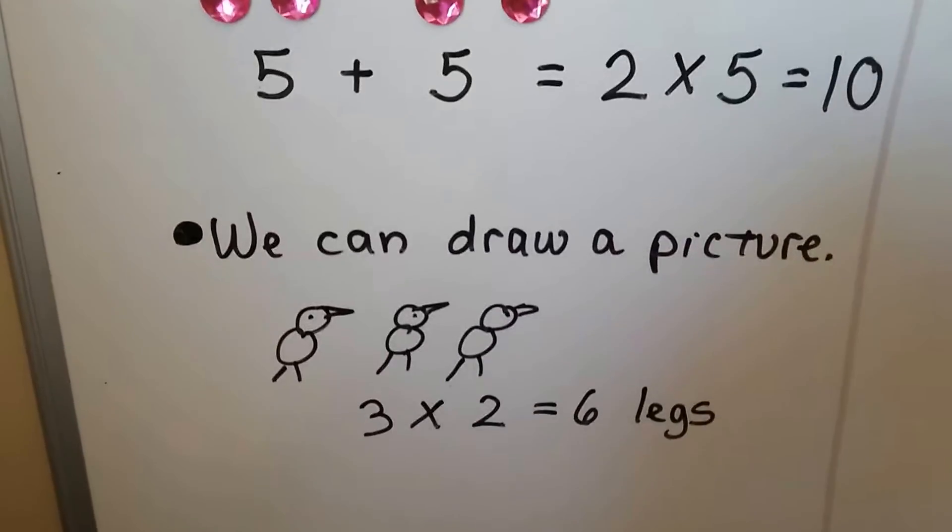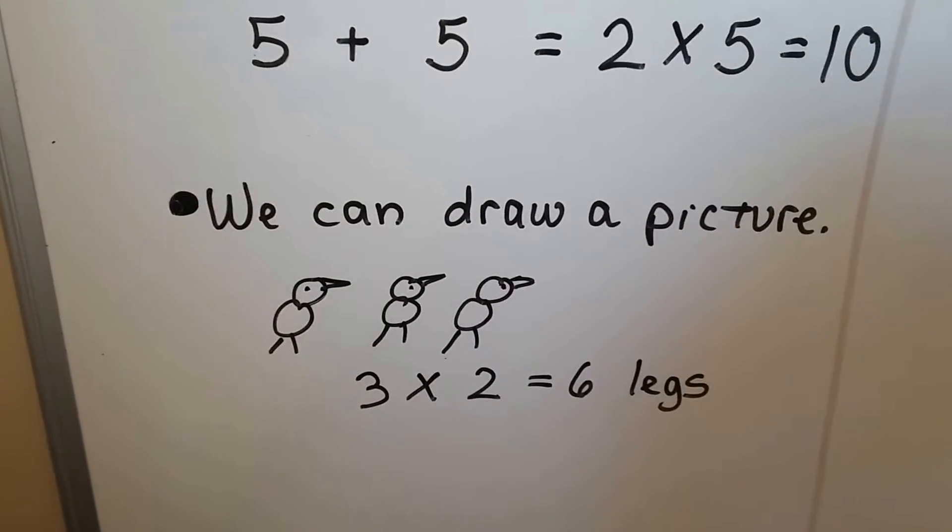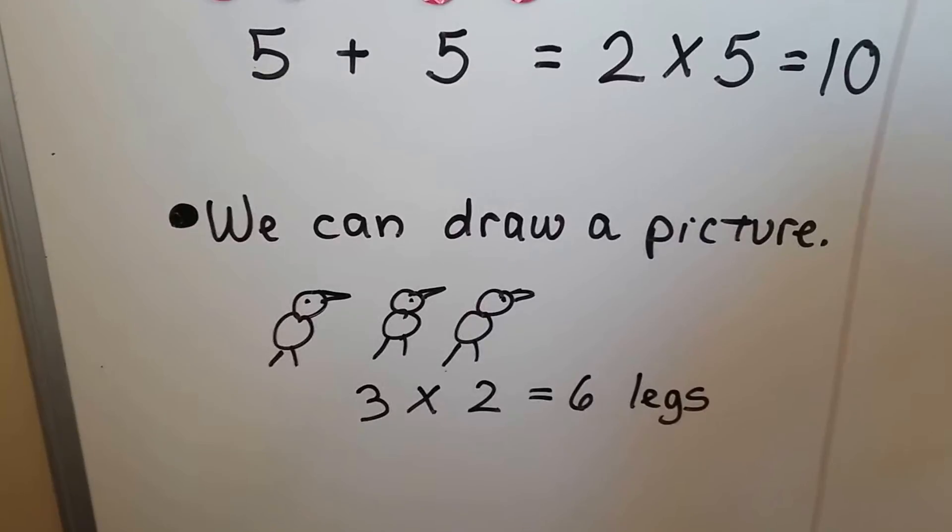And we can draw a picture. If we have three chickens or three birds and each have two legs, that's six legs, isn't it?